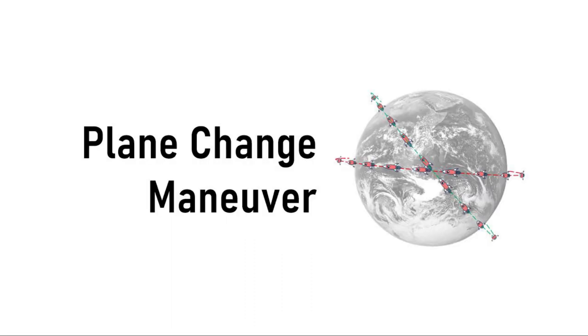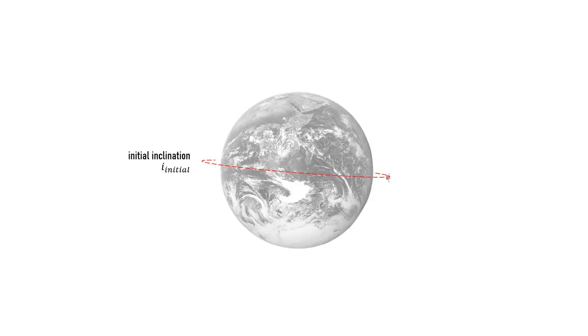Let's take a look at a simple plane change maneuver. We look at an example where a circular orbit needs to change its inclination by an angle. We want to only change its inclination and keep its initial and final orbital velocity the same.